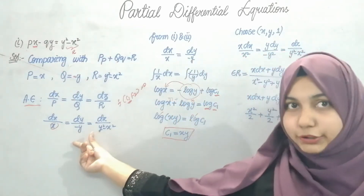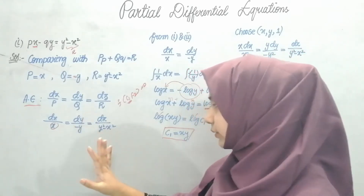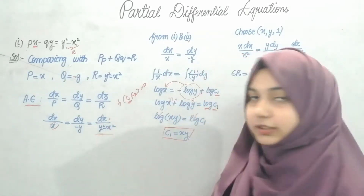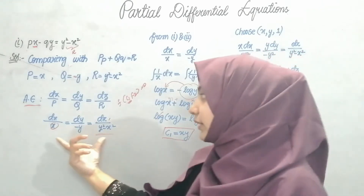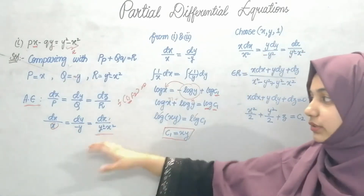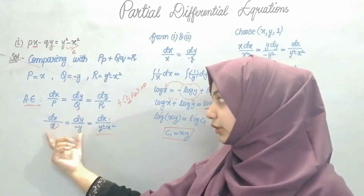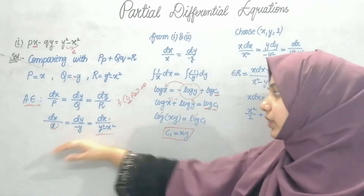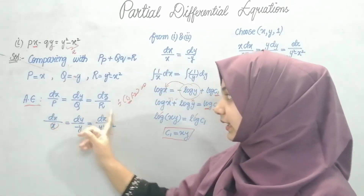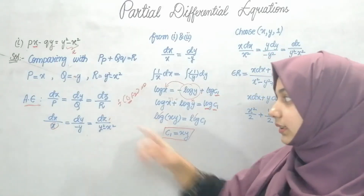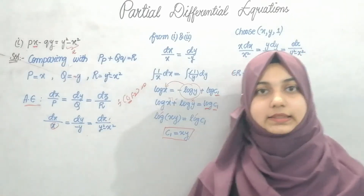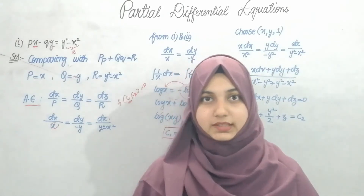Now for finding C2 — if I equate the second and third terms, I have a y term but no z term, so it's not possible. Similarly, equating the first and third terms doesn't work because I don't have matching variables. Since x and y are already used, I cannot take those pairs again. So I need to go with the method of multipliers.